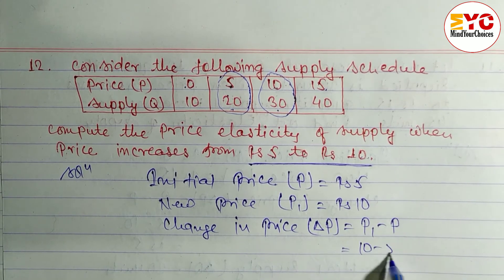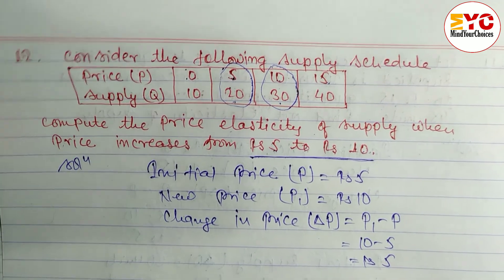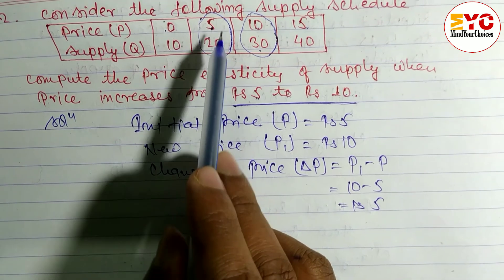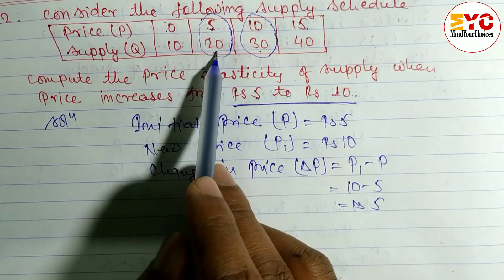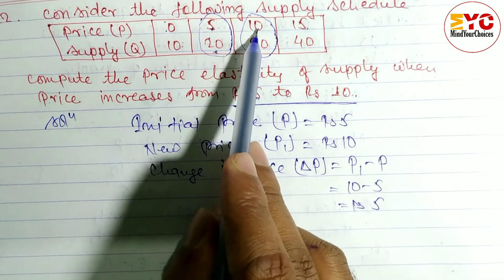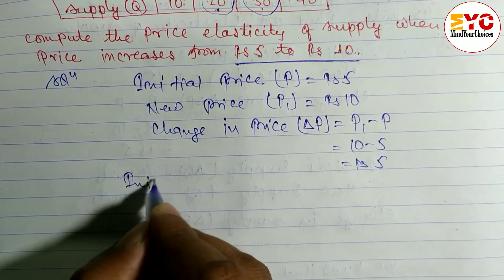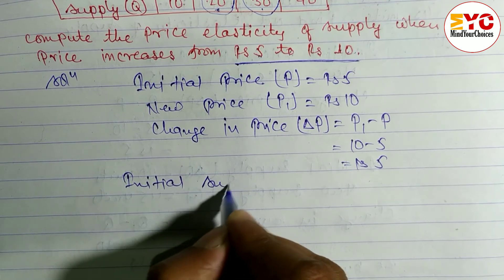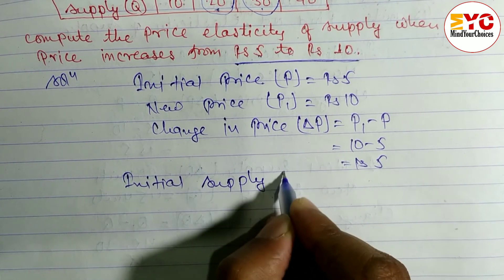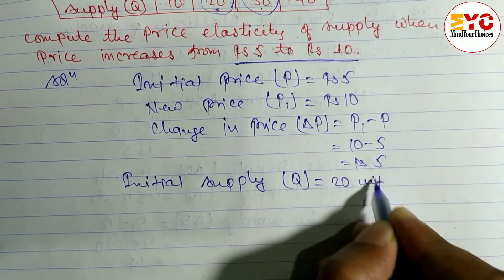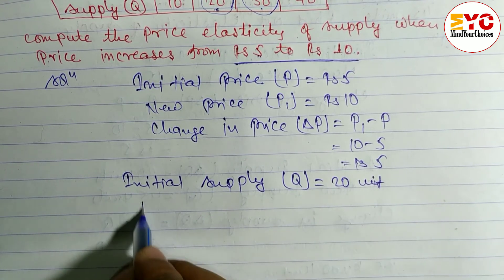Now we have to write down initial supply and new supply. When price is 5, initial supply is 20. When new price is 10, new supply is 30. So initial supply, denoted by Q, is 20 units, and new supply, denoted by Q₁, is equal to 30 units.